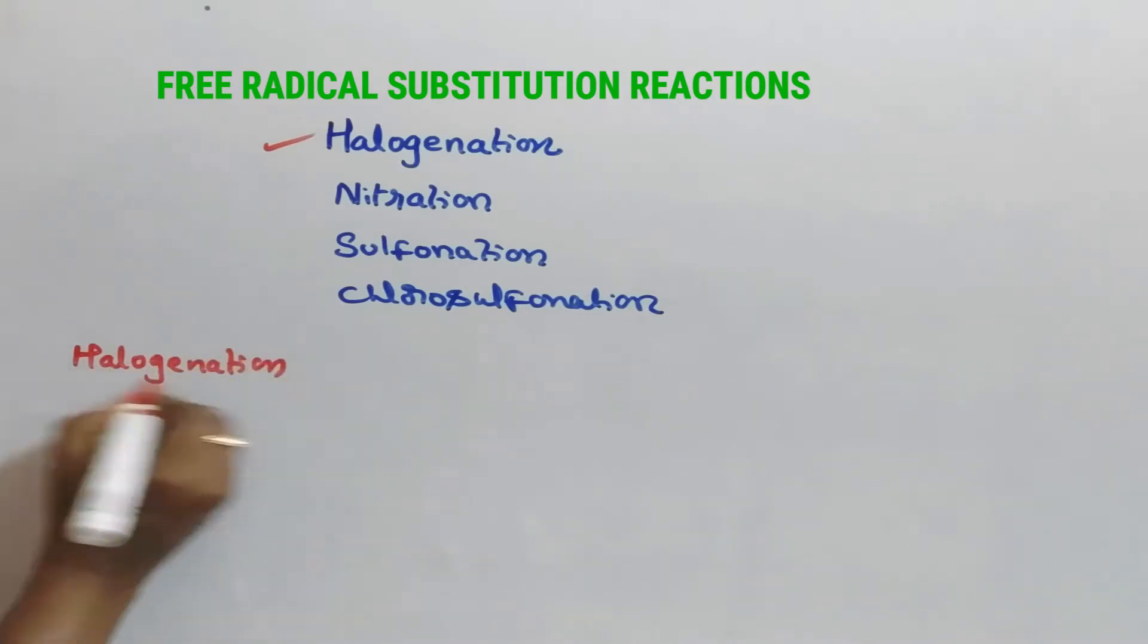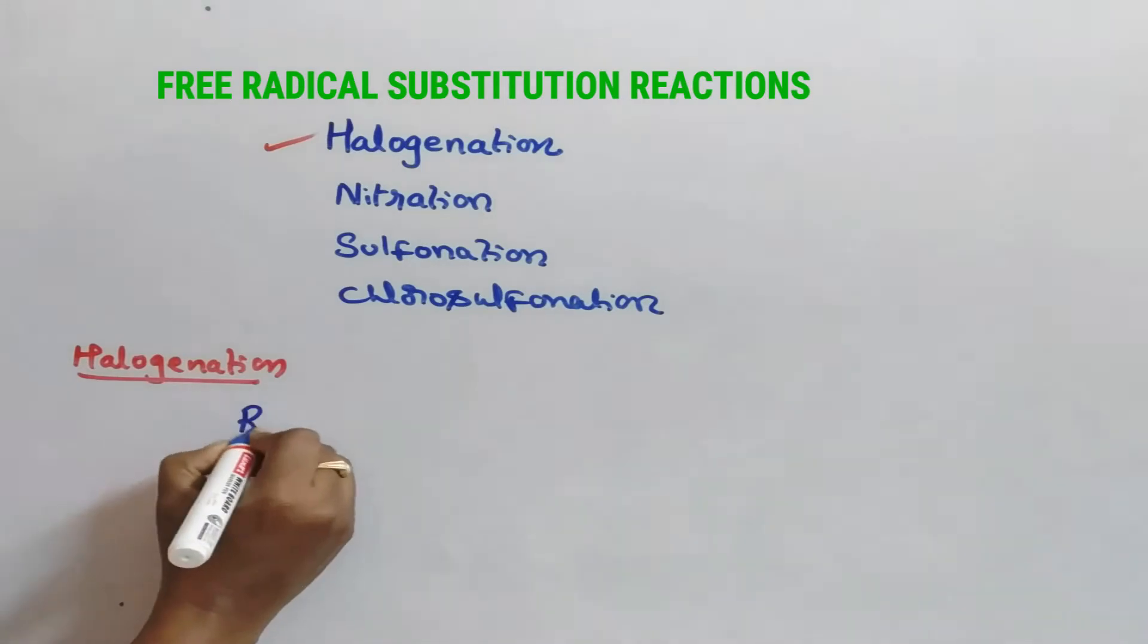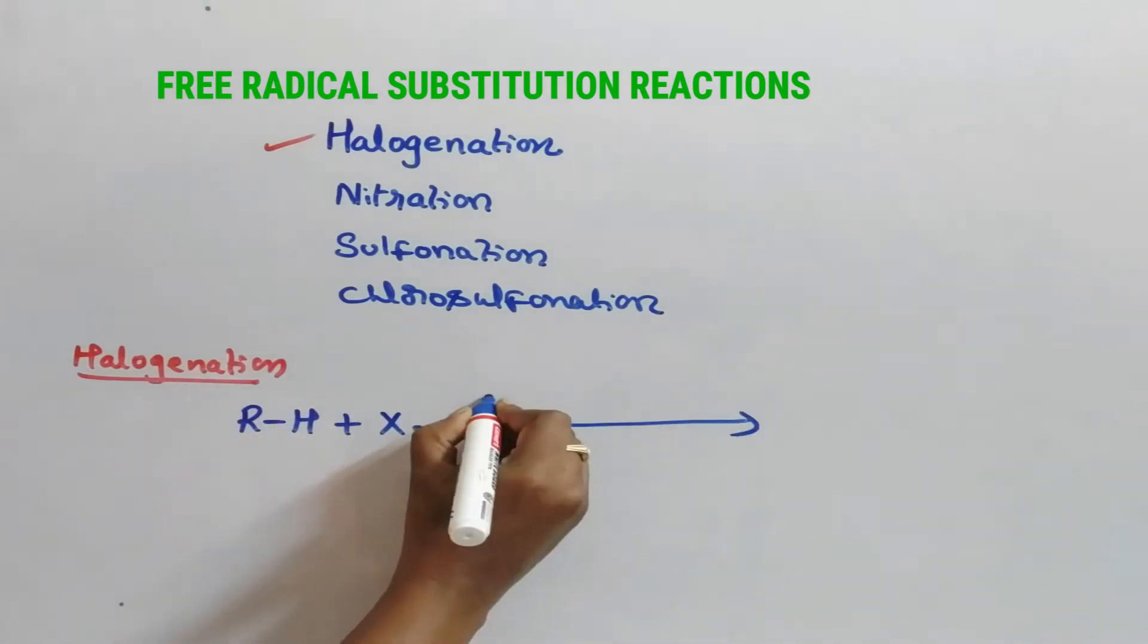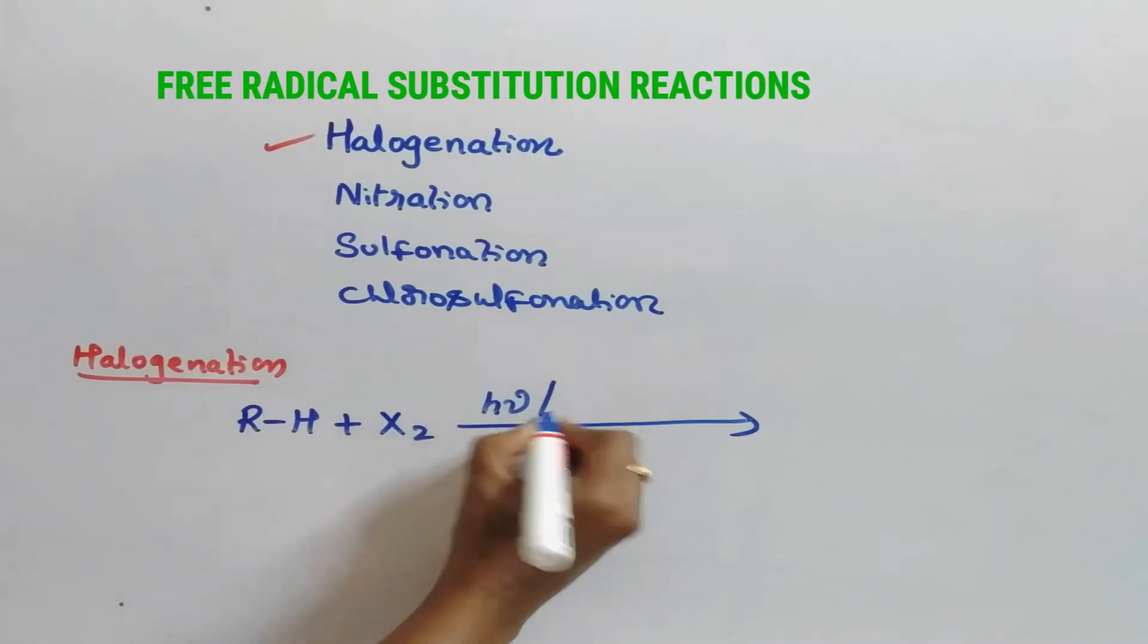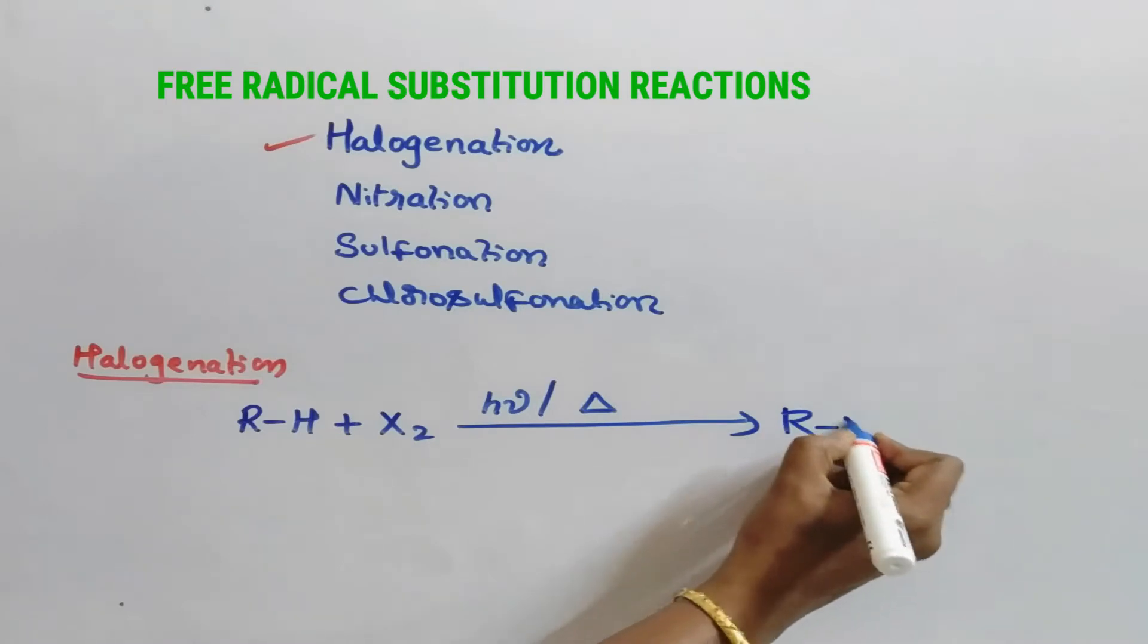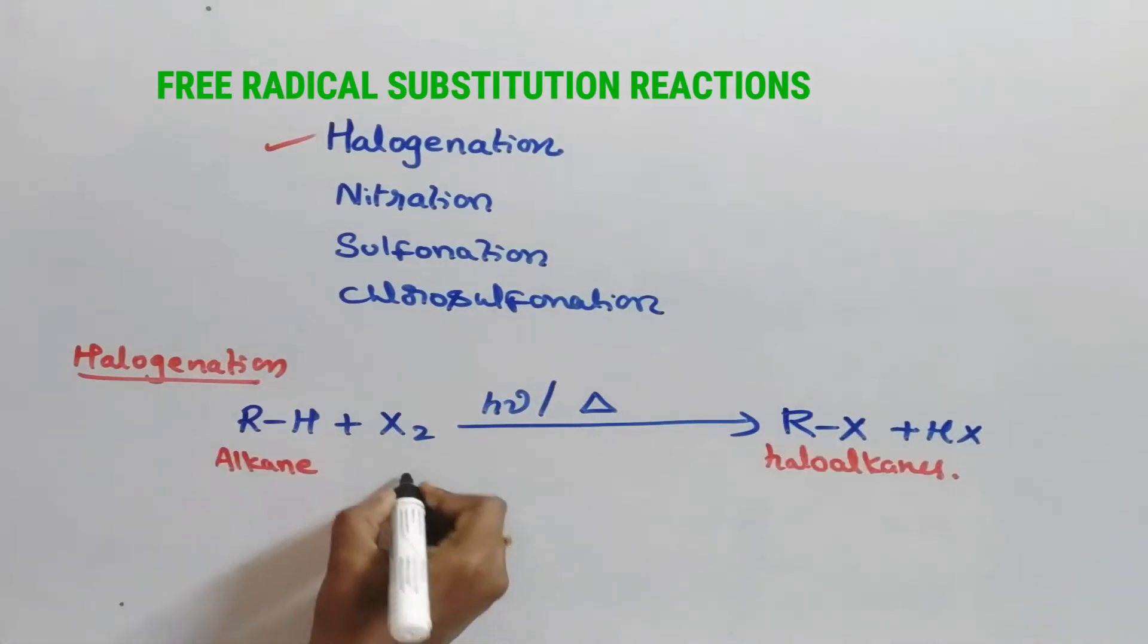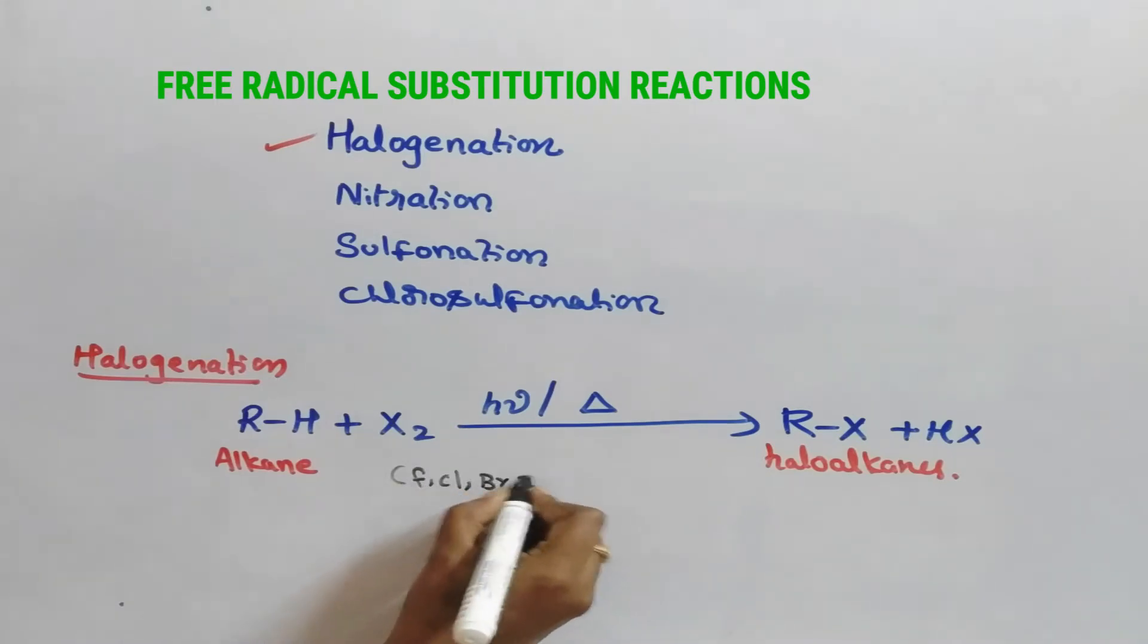Halogenation. Alkanes react with halogens in the presence of UV light or at high temperature resulting in the formation of haloalkanes. Here X is fluorine, chlorine, bromine or iodine, which indicates halogens.